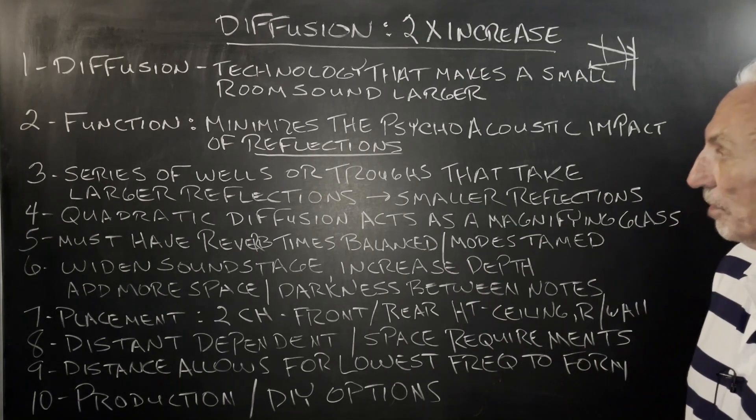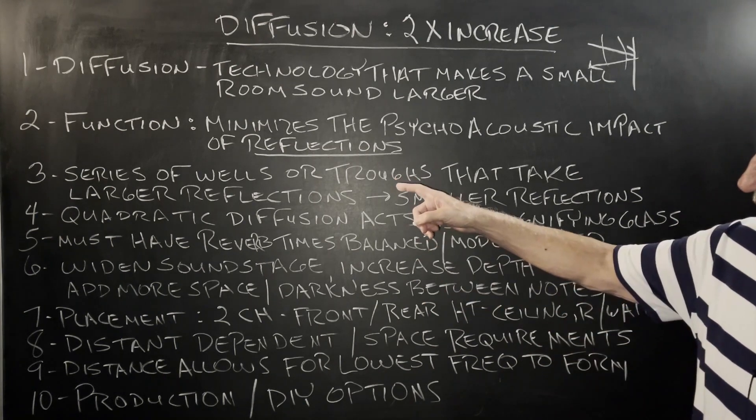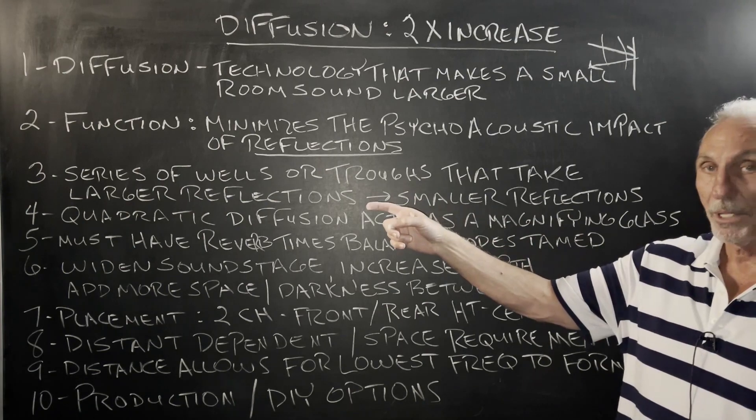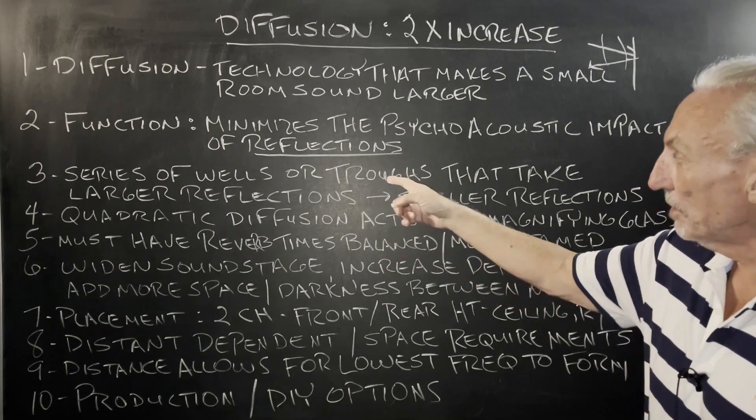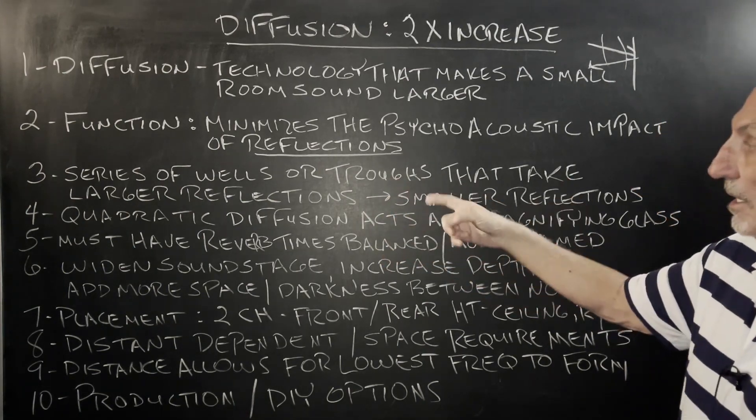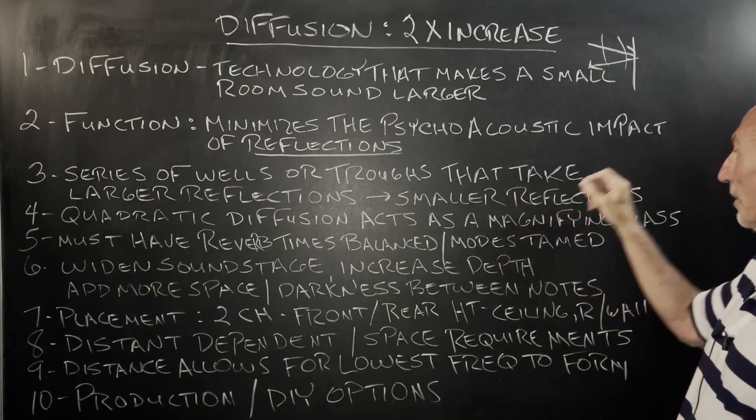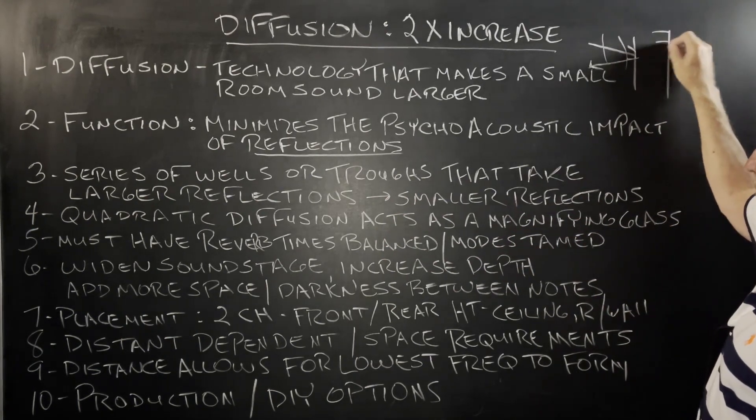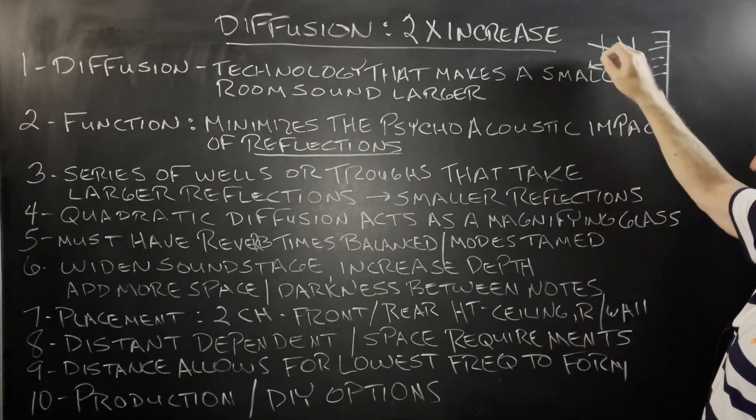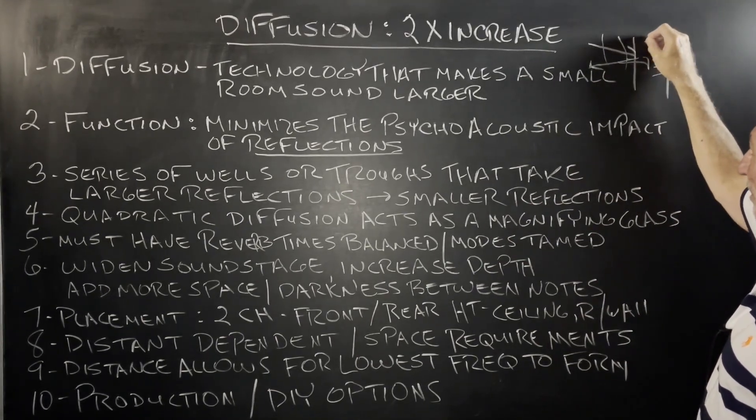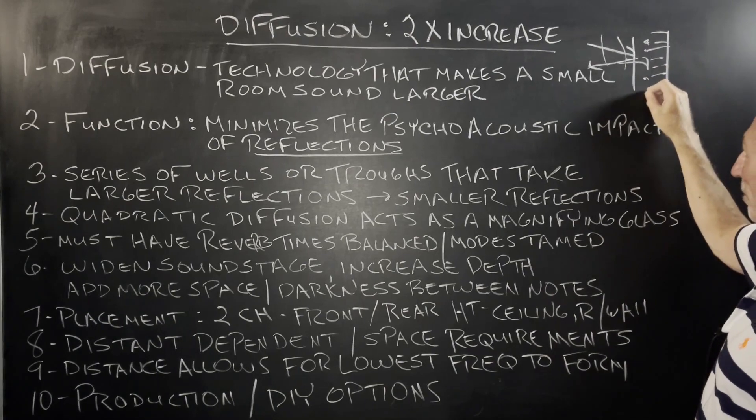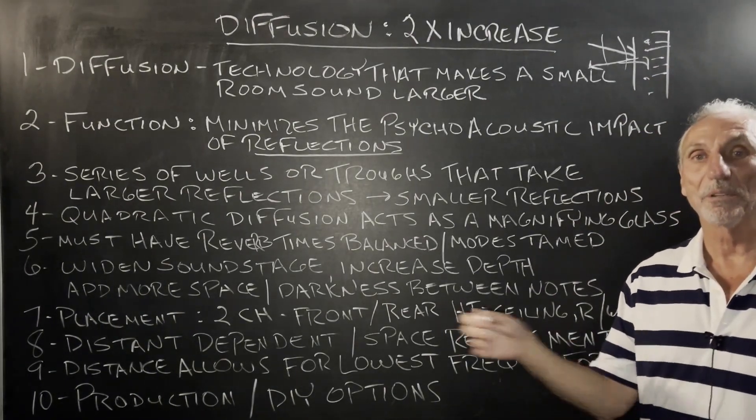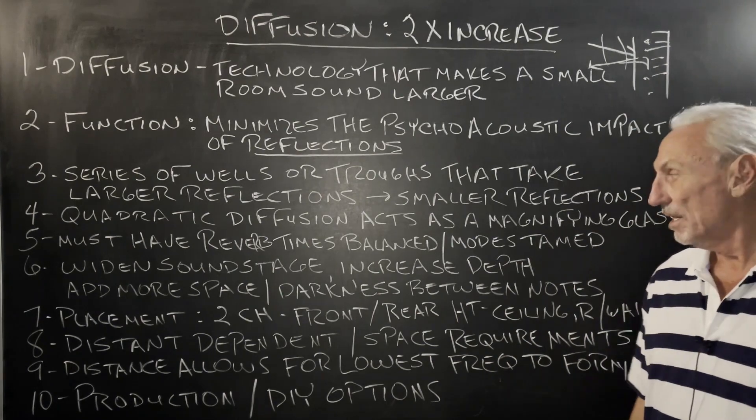And it goes all the way through the process. What is diffusion? Quadratic is the only one that we use. It's the only one that's predictable and consistent. It's a series of wells or troughs that take larger reflections and break them into smaller ones. So if you take the surface area of a diffuser and you put energy into it, it comes out in a much smaller pattern than a big primary reflection. So it's a series of secondary reflections.